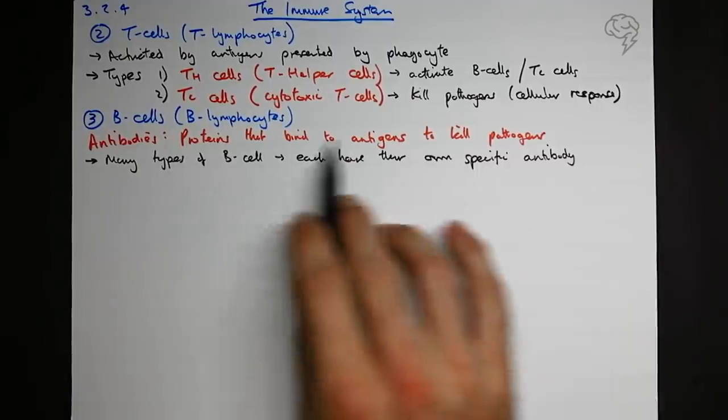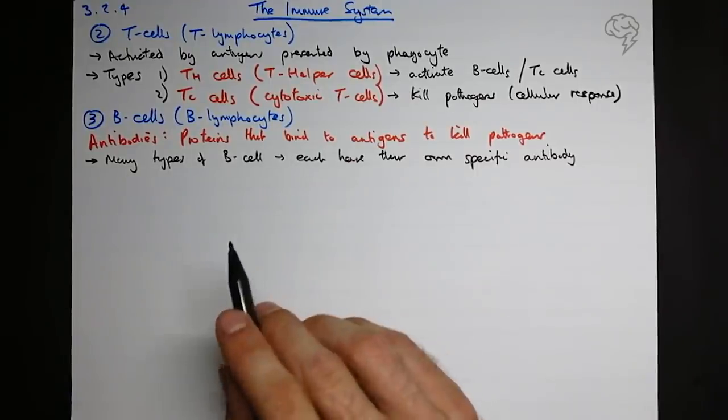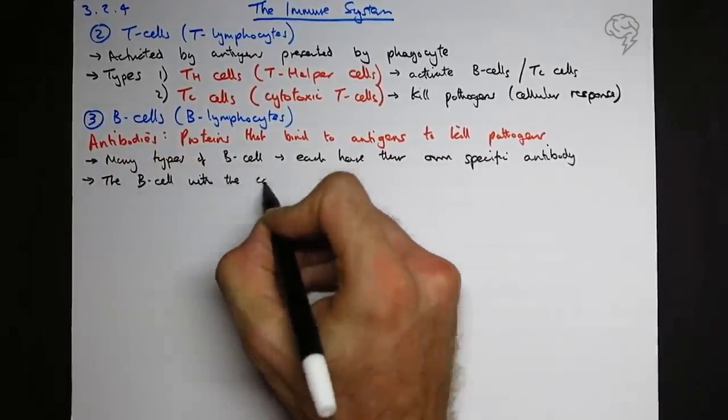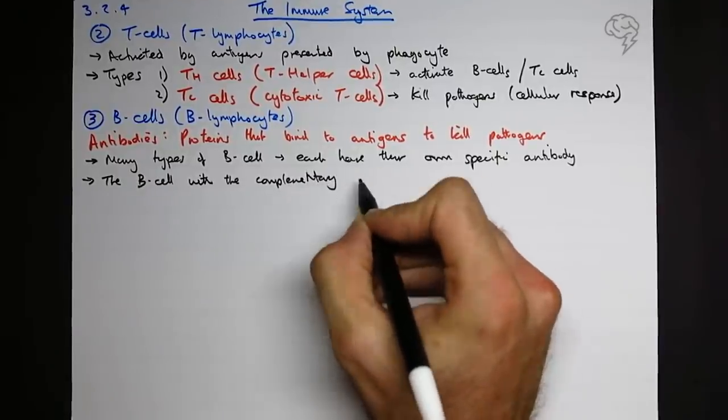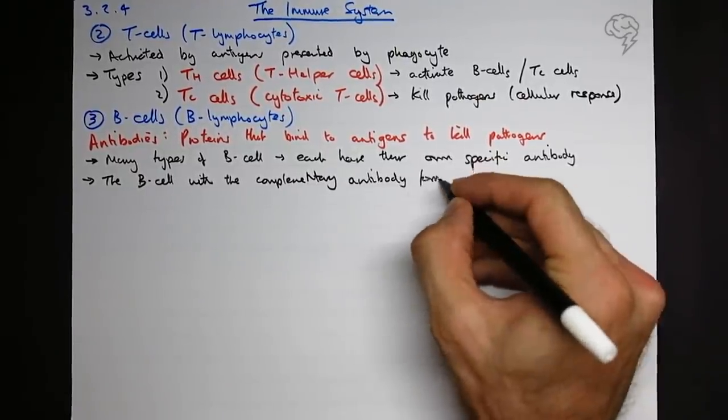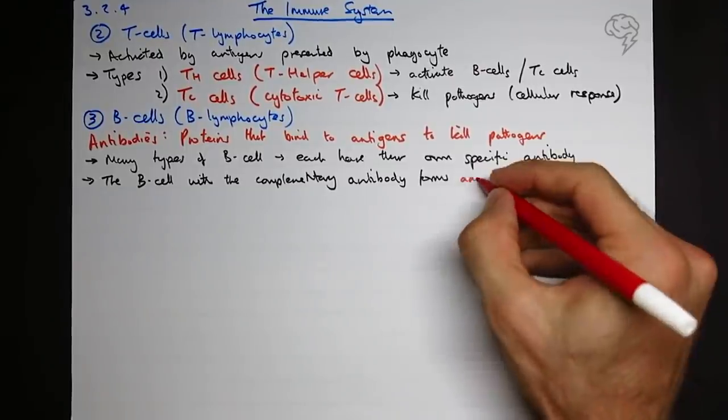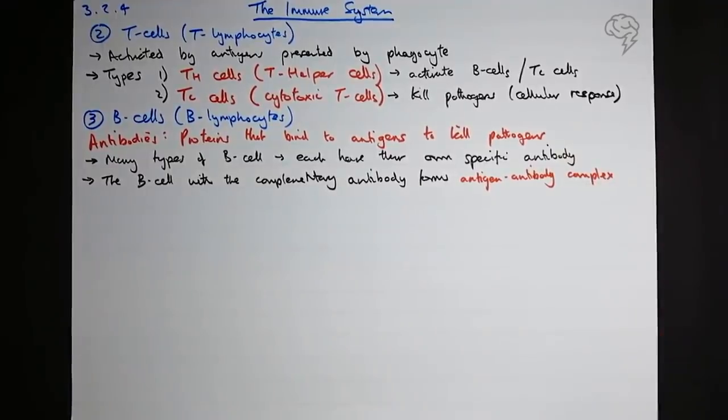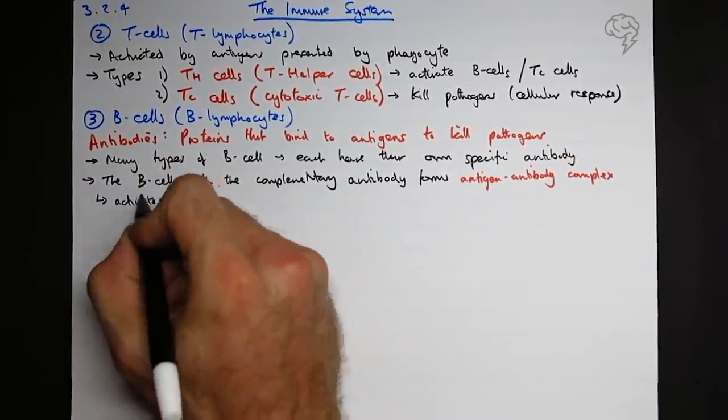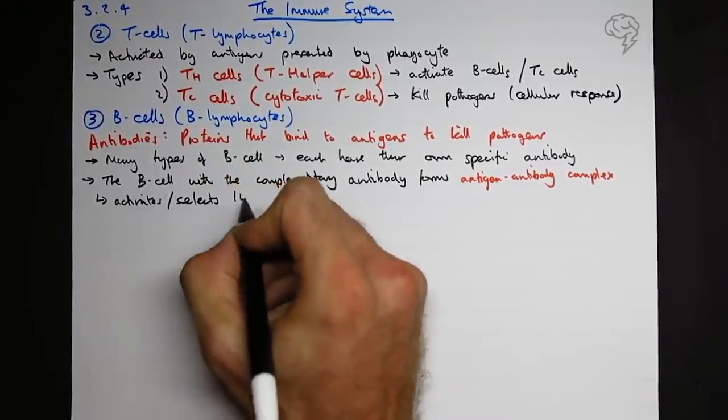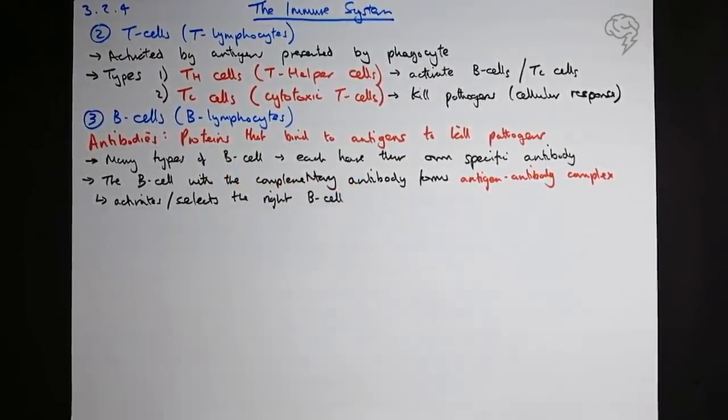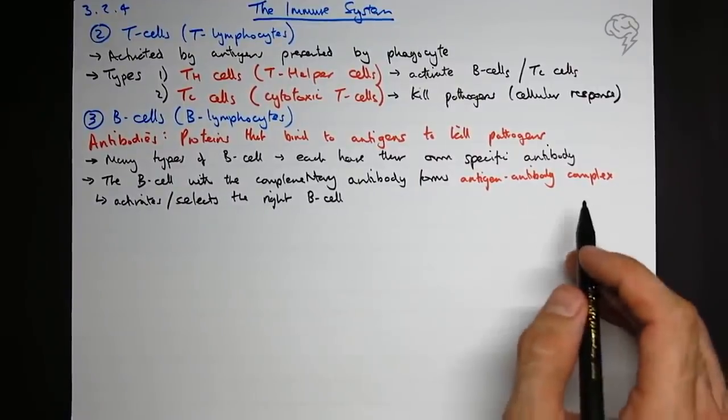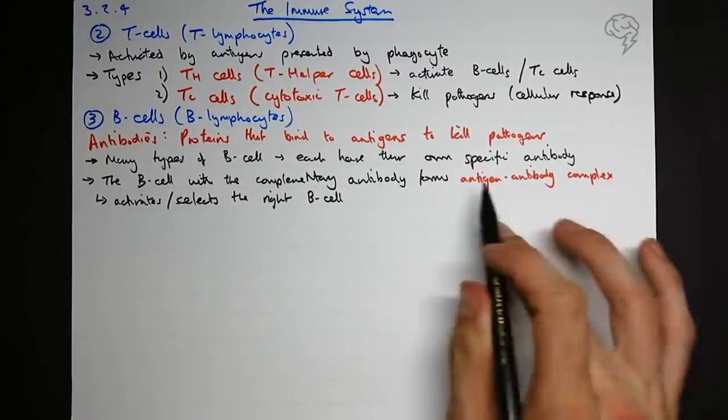But how do we know which B-cell we need? Well, we can say the B-cell with the complementary antibody forms, and we're going to be a key term, an antigen-antibody complex. So this activates, or we could say selects, the right B-cell. And so this selection process, only the one that is complementary, that forms the antigen-antibody complex with the pathogen's antigen, is going to be selected.